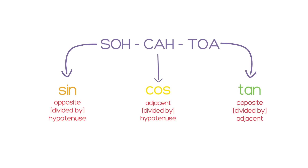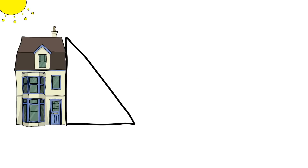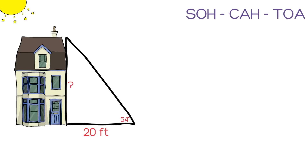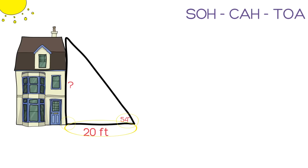Let's look at an example. The sun is shining on a house. It creates a shadow that is 20 feet long. If the sun is at an angle of 54 degrees, what is the height of the house? Let's remember SOH-CAH-TOA. We know three things already: there is a 90 degree angle, a 54 degree angle, and a 20 foot leg on the right triangle we can create to represent this scenario.